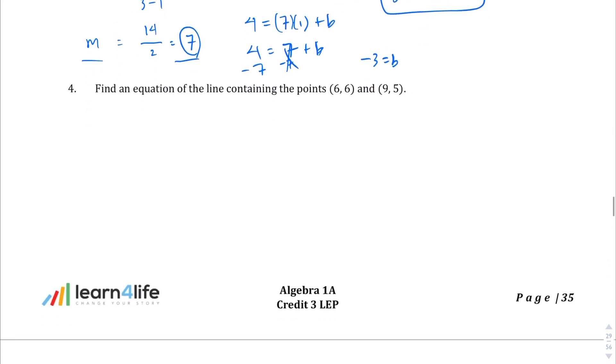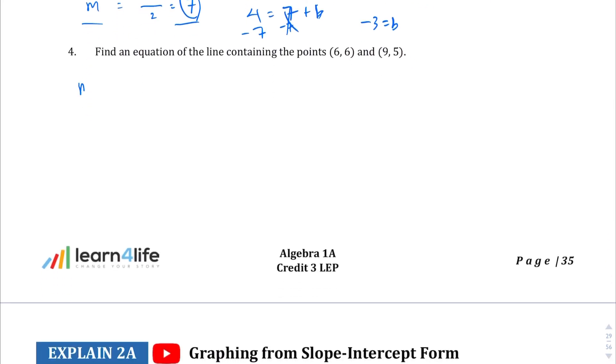Okay, question number 4. Let's find the slope again. M equals y2 minus y1 over x2 minus x1. This is going to be the first point. Second point. x1, y1. x2, y2. Okay, so y2 is 5. y1 is 6. So, we're going to do 5 minus 6 over 9 minus 6. 9 minus 6. When we do that, 5 minus 6 is negative 1. 9 minus 6 is 3. So, here's our slope. That's our slope.